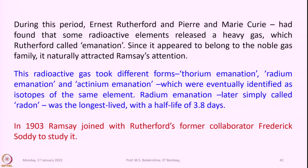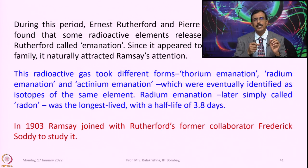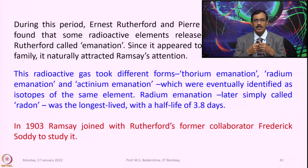During this period, Ernest Rutherford and Pierre and Marie Curie had found that some radioactive elements released a heavy gas which Rutherford called 'emanation.' Since it appeared to belong to the noble gas family, it naturally attracted Ramsey's attention. This radioactive gas took different forms — thorium emanation and actinium emanation — which were eventually identified as isotopes of the same element.